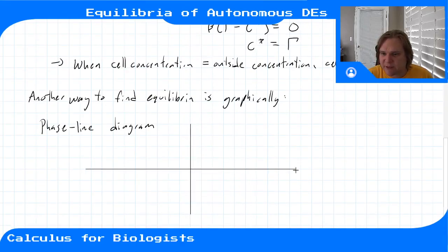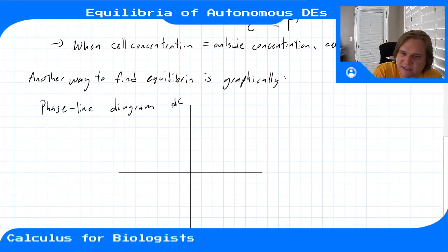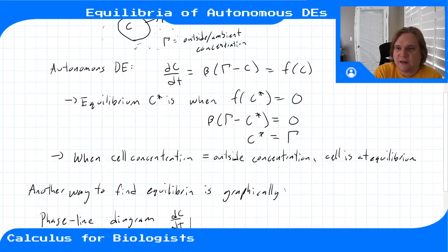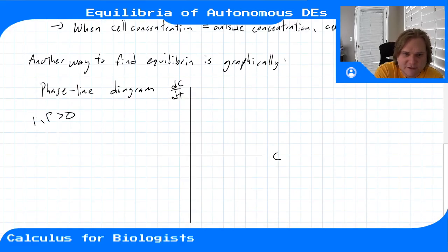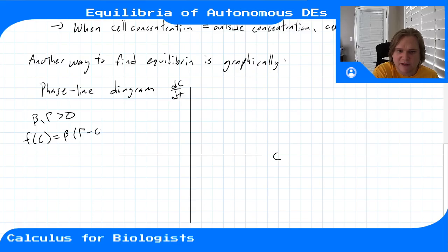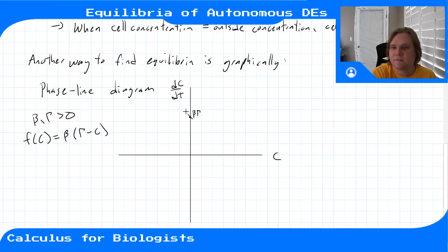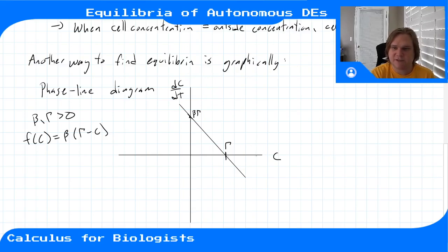Here we plot dc/dt versus c — not versus time. We plot the function β(γ - c), assuming β and γ are both positive. This is just a sketch. The function f(c) = β(γ - c) has a y-intercept of βγ and is a straight line that intersects the c-axis at γ, because that's where f(c) = 0. So this point is βγ and the zero crossing is at γ.